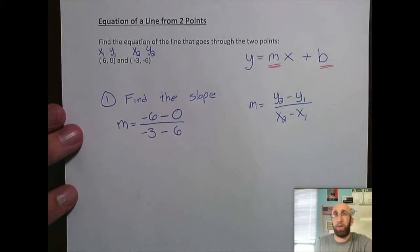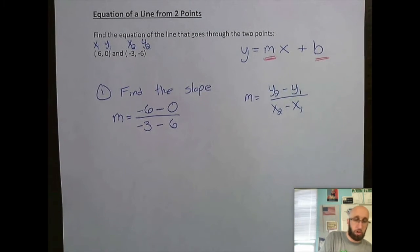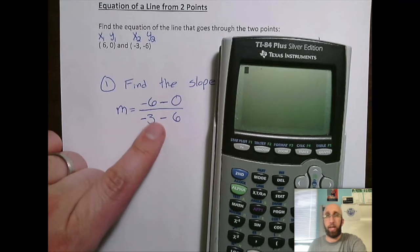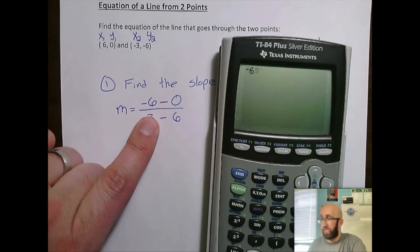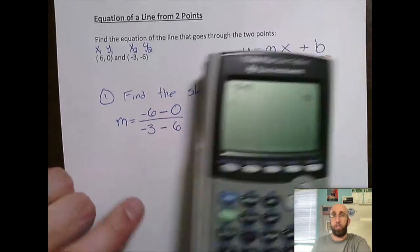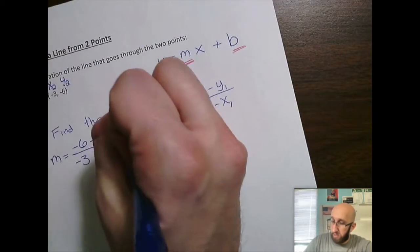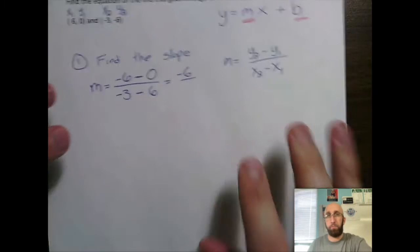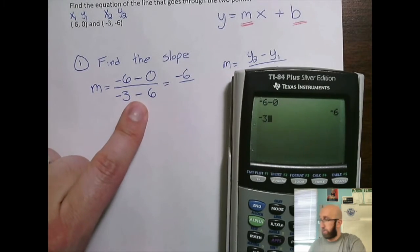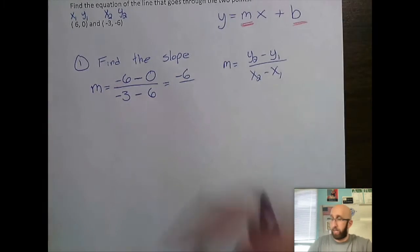And then I might lean a little bit on a calculator here. If you're not so strong with the quick mental math with integers here, positives and negatives, go ahead and feel free to lean on that calculator. So I'm going to start with negative 6 minus 0, which is negative 6 for the top of this fraction. On the bottom, negative 3 subtract 6. Negative 3 subtract 6 and I get negative 9.